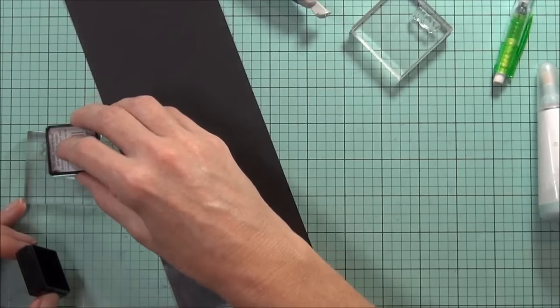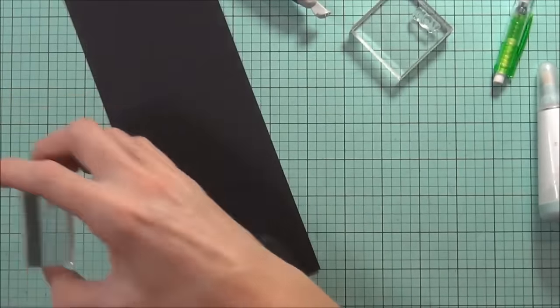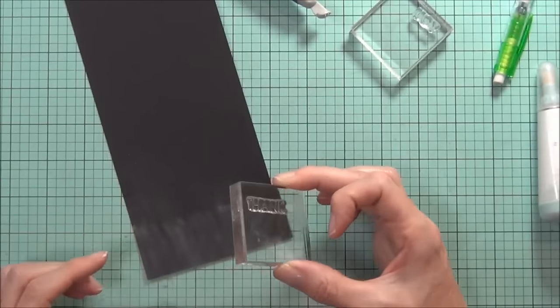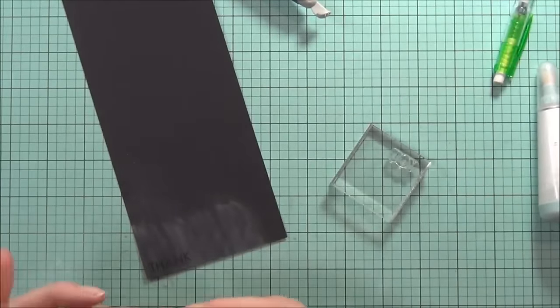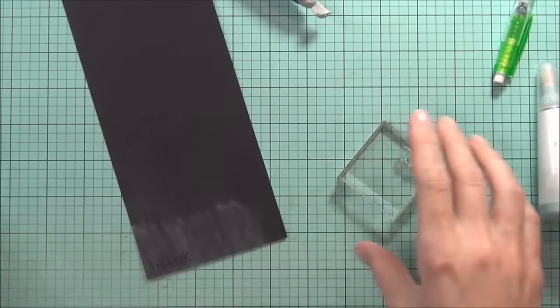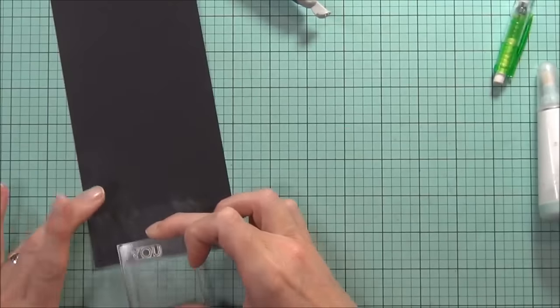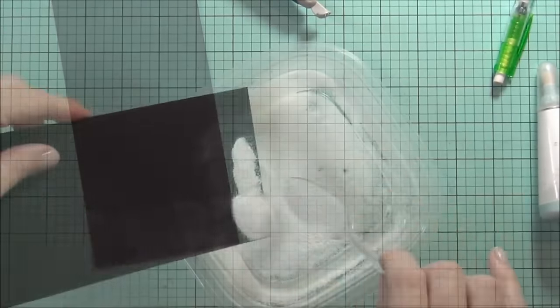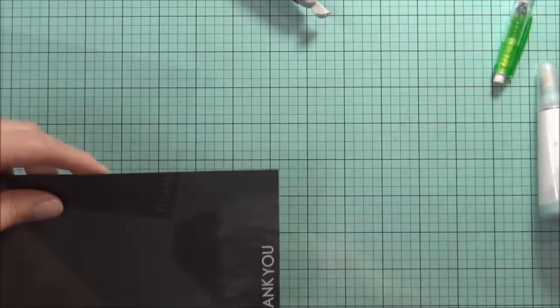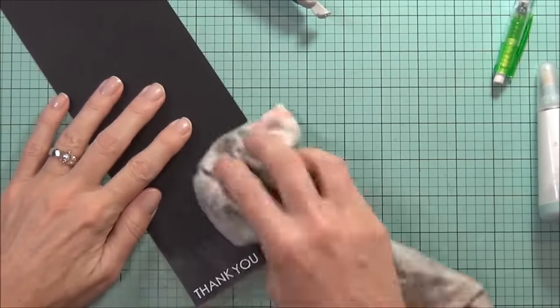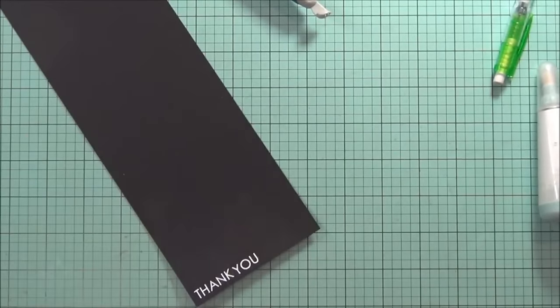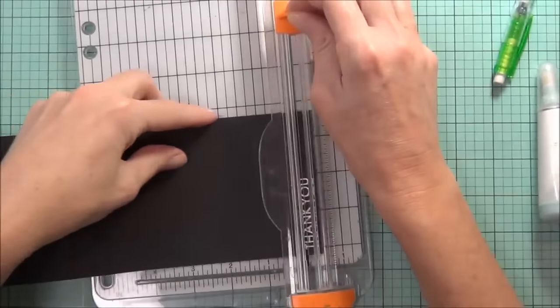Now I'm going to start working on my sentiment. This is from A Good Day set and it actually says thank you. It's hard to see at the moment, but I'm going to add some powder to it. I'm working on the smooth side of some Bazzill cardstock, this is black. There you go, now you can see it. I've used the powder tool because black cardstock is notorious for showing bits of embossing powder.